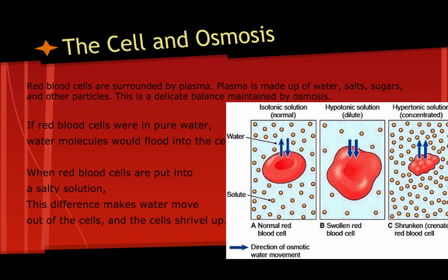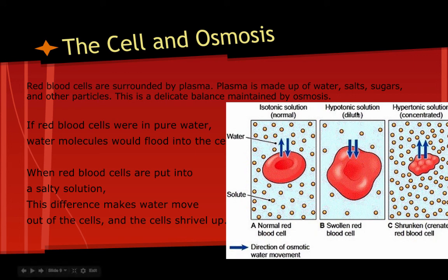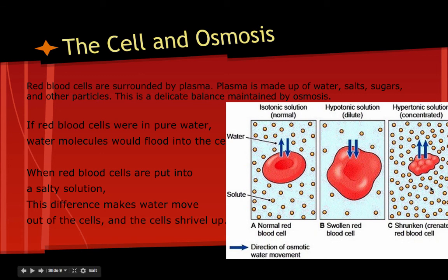If red blood cells were put into pure water, water molecules would flood the cell, because the concentration of solutes is greater inside the cell, so water flows in. When red blood cells are put into a salty solution, water flows out of the cell toward the salt solution, leaving the cell very shrunken and shriveled up.